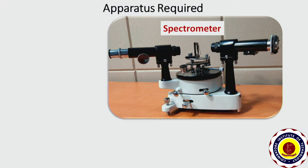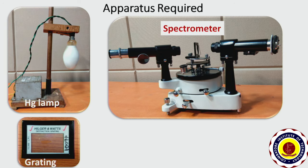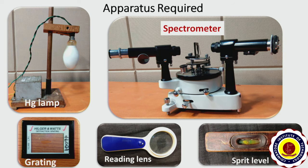Apparatus required for this experiment: spectrometer, mercury vapor lamp, grating, grating vision, reading lens, and spirit level.